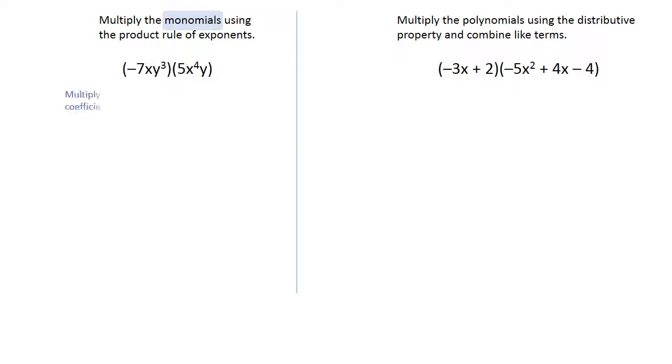We're going to multiply the coefficients, and then when we have exponents, we're going to add those exponents. The coefficients are negative 7 and positive 5. Multiplying those gives you negative 35.